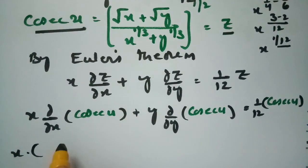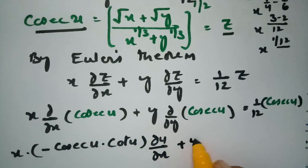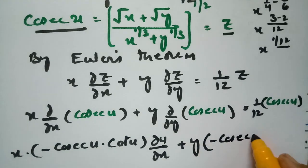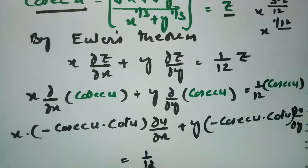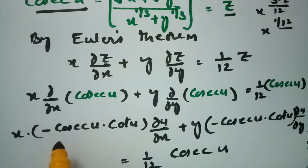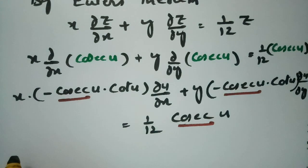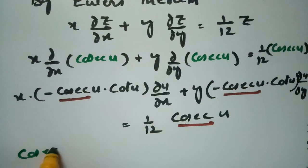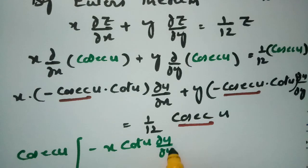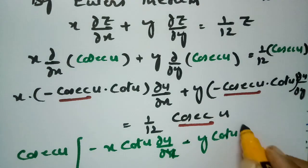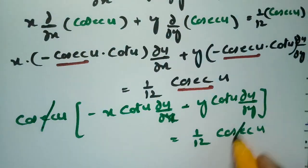So: x·(−cosec u · cot u · ∂u/∂x) + y·(−cosec u · cot u · ∂u/∂y) = (1/12)·cosec(u). Taking cosec(u) common on the left and cancelling with the right side: −cot(u)·[x · ∂u/∂x + y · ∂u/∂y] = 1/12.